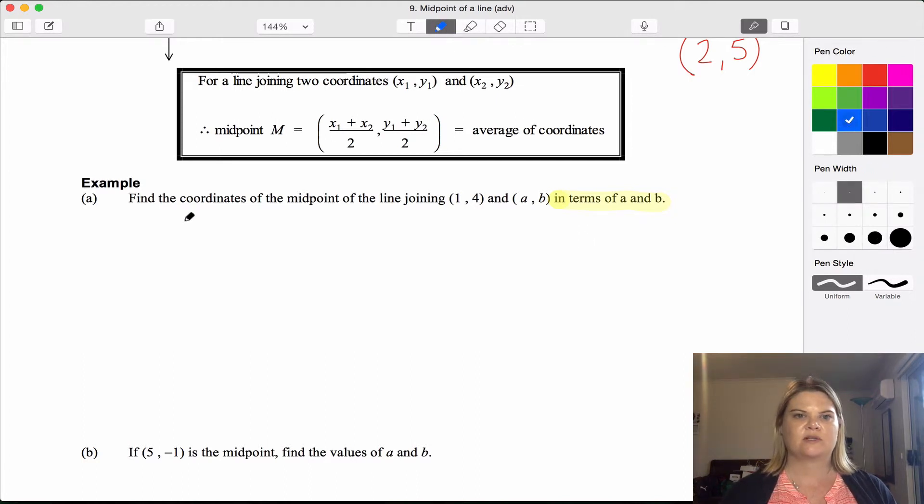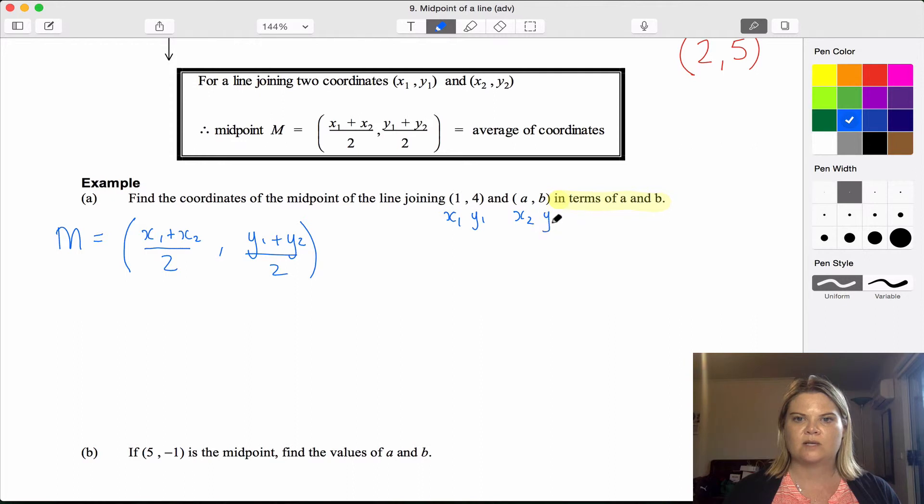Okay, let's have a look at a solution. Find the coordinates of the midpoint of the line joining this point and this point. So the a and the b are just parameters that are in the place of the coordinate points. So I'm going to start by writing our formula out that we're going to use.